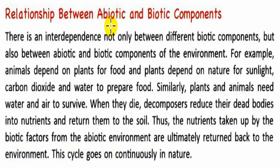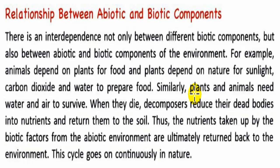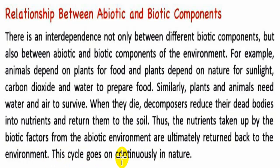Let's see the relationship between abiotic and biotic components. There is an interdependence not only between different biotic components but also between abiotic and biotic components of the environment. For example, animals depend on plants for food, and plants depend on nature for sunlight, carbon dioxide, and water to prepare food. Similarly, plants and animals need water and air to survive. When they die, decomposers reduce their dead bodies into nutrients and return them to the soil. Thus the nutrients taken up by biotic factors from the abiotic environment are ultimately returned back to the environment. This cycle goes on continuously in nature.